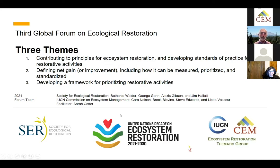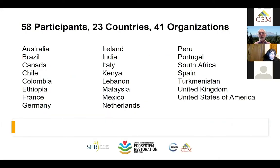The first theme was to contribute to the development of general principles for ecosystem restoration and standards of practice for restorative activities across the continuum. The second was to define net gain or improvement from restoration activities, including how it can be measured, prioritized, and standardized. The third was development of a framework for prioritizing restorative activities, in particular ecological restoration. The forum included 58 participants from 23 countries and 41 organizations to consider these issues.